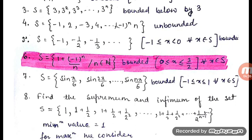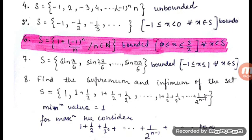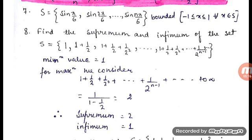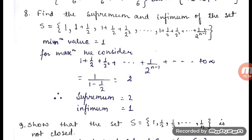Now we have to find the supremum and infimum of the set {1, 1 + 1/2, 1 + 1/2 + 1/2², ...}. The first value, 1, is the minimum. Moving forward, values increase. For the maximum, the nth term is 1 + 1/2 + 1/2² + ... + 1/2^(n-1) to infinity, which is an infinite GP series with first term 1 and common ratio 1/2. Applying the formula A/(1−R) gives 1/(1−1/2) = 2. So the supremum is 2 and the infimum is 1.